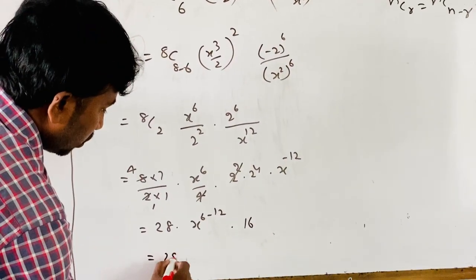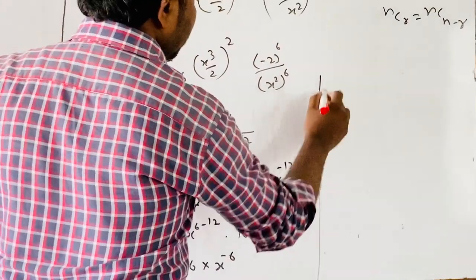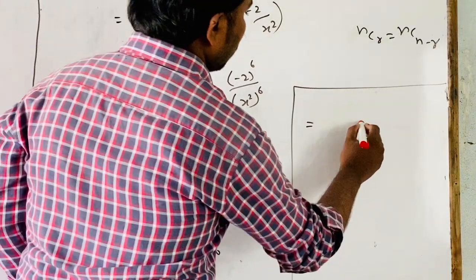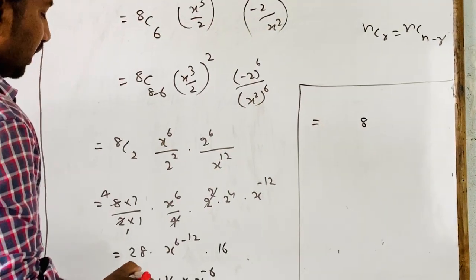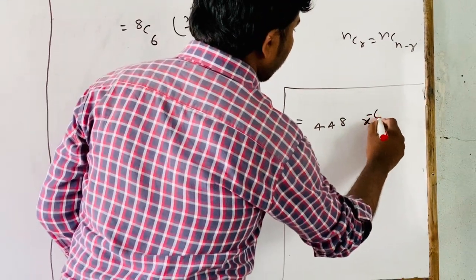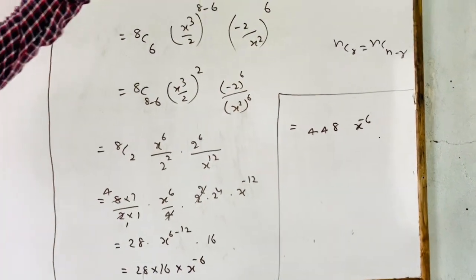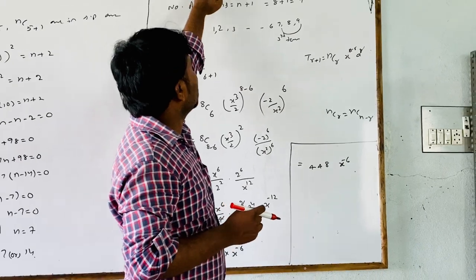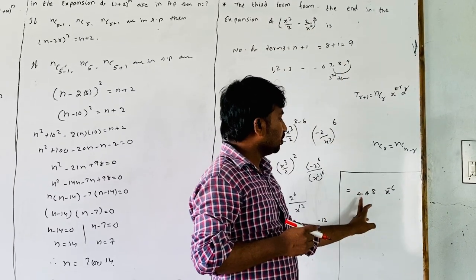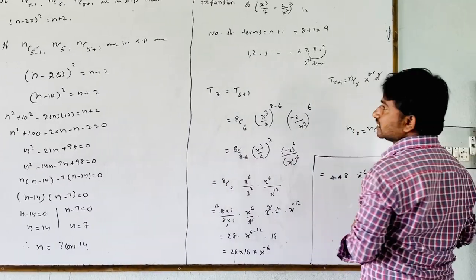Therefore, the third term from the end in the expansion of (x²/2 - 2/x²)^8 is 28 × 16 × x^(-6) = 448 x^(-6). The answer is 448 / x^6.